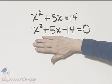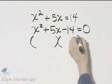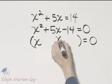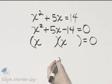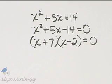we factor, in this case, this trinomial. So let me draw two sets of parentheses, and let's see if this factors. x times x, and then two factors of 14 whose sum is positive 5. It will be positive 7 and negative 2.